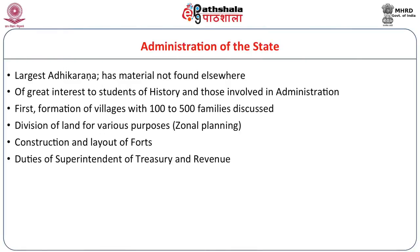We go to the next topic within public administration: the administration itself. This is the largest Adhikarana and has material not found elsewhere in contemporary or much later texts. First, formation of villages with 100 to 500 families is discussed — interestingly, 500 families is still about the average village size 2500 years later. Then the division of land for various purposes is dealt with — that is, zonal planning. There are also chapters on construction and layout of forts and duties of superintendents of treasury and revenue.